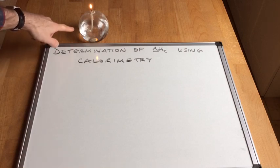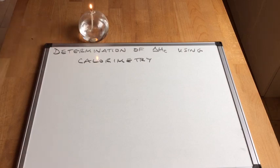So I've got a spirit burner here that's got some propane-1-ol in and it's burning away there, it's combusting, it's reacting with the oxygen in the air and the calorimetry method can be used to determine a value for the enthalpy change of combustion for this reaction.